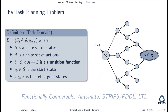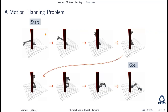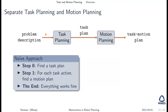For motion planning, you have a start and a goal and want to find a collision-free path. The classic name for this is the piano movers problem — you have your world, your robot, your configuration space, your initial configuration, and your goal, and you want to find a collision-free path.